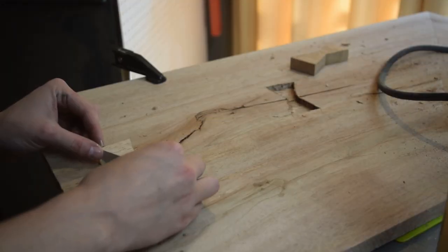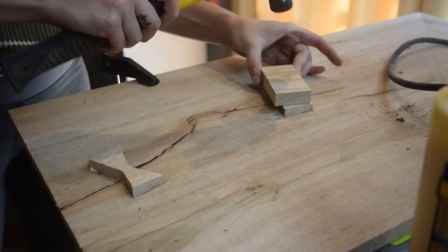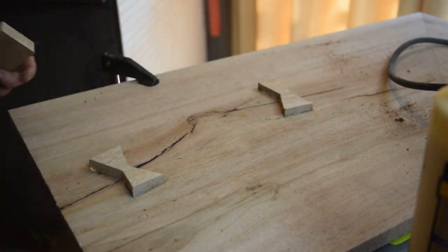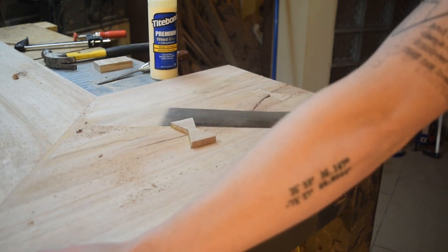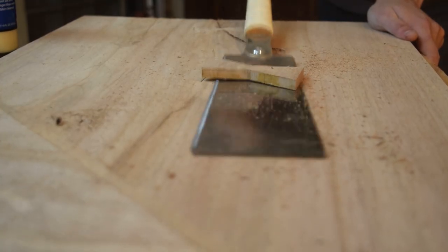After getting those to a good fit, I glued the bowties into place. Then, after letting them cure overnight, removed the excess with a pull saw. And that's a wrap!